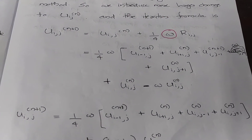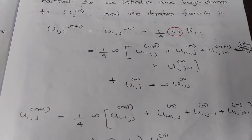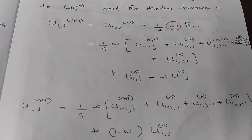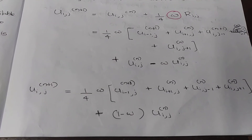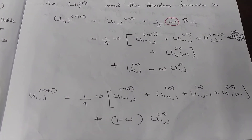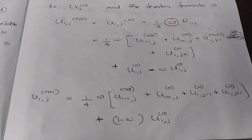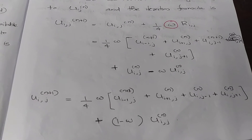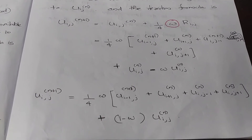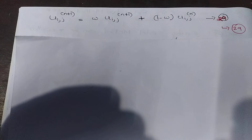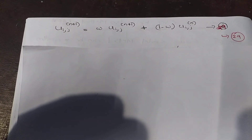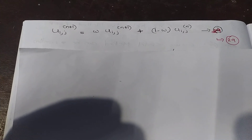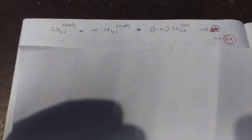Expanding and rearranging, the SOR formula becomes u(i,j)^(n+1) = omega·u(i,j)^(n+1,GS) + (1 - omega)·u(i,j)^n, which is equation number 29. Here omega is expressed in terms of u(i-1,j), u(i+1,j), u(i,j-1), and u(i,j+1) values weighted by (1-omega) and (omega/4) respectively.